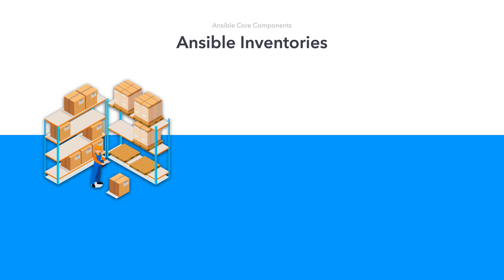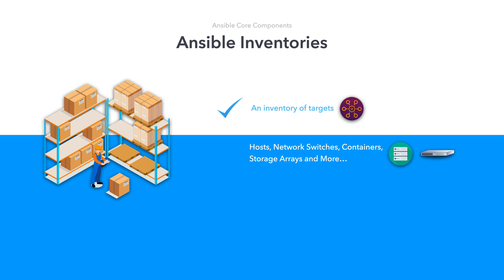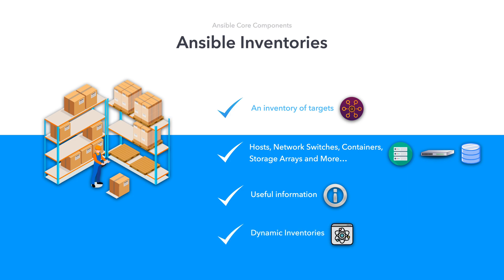Lastly, for this introduction, we mention the concept of inventories. Inventories are a collection of targets, most commonly comprised of hosts, but can also relate to other components such as network switches, containers, storage arrays, or other physical and virtual components that we wish to interact with through Ansible. The inventory also provides useful information that we can use alongside our targets during the Ansible execution. Inventories can be quite simple, where they are a text file with a selection of targets. There's also the ability to create dynamic inventories where the inventory is an executable with the data being sourced dynamically, opening up a lot of flexibility where we store our data elsewhere and make use of it at run time.